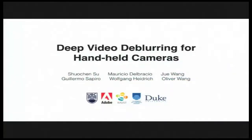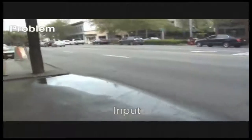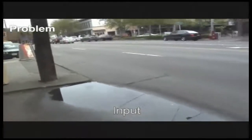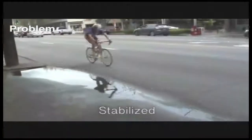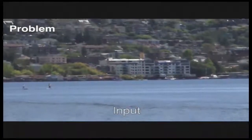Good morning everyone. I'm Shuo Chen Su from the University of British Columbia, and I will be presenting our paper on deep video de-blurring for handheld cameras. Motion blur and camera shake are two coupled problems in videos captured by handheld devices. While stabilization techniques have been improved dramatically, motion blur remains a significant problem in the stabilized footage.